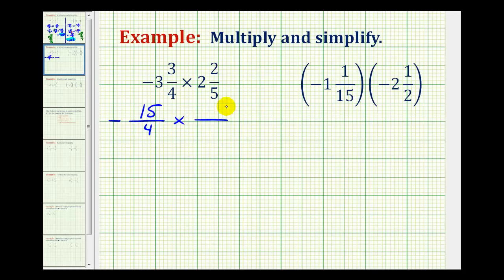Then we'll have times, this fraction has a denominator of five, and the numerator would be five times two plus two, which is equal to 12.